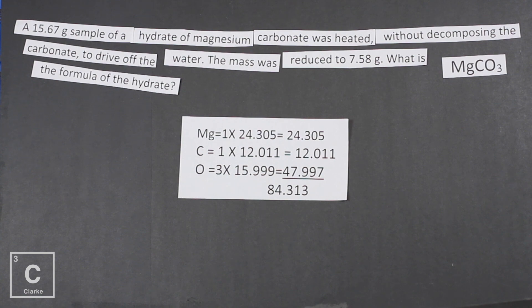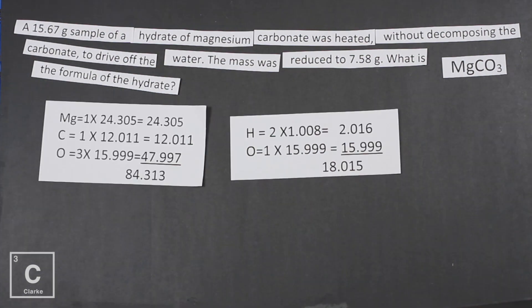Those numbers are from the periodic table. If you need help with molar mass, go check that video out. We also need the molar mass of water. While you're calculating the mass of hydrates and you calculate the molar mass of water, you're going to start memorizing this number — not on purpose, just because we use it so often. We've got two hydrogens and one oxygen; we add those up and get 18.015 grams per mole. Keep those numbers handy because we're going to need them in a second.